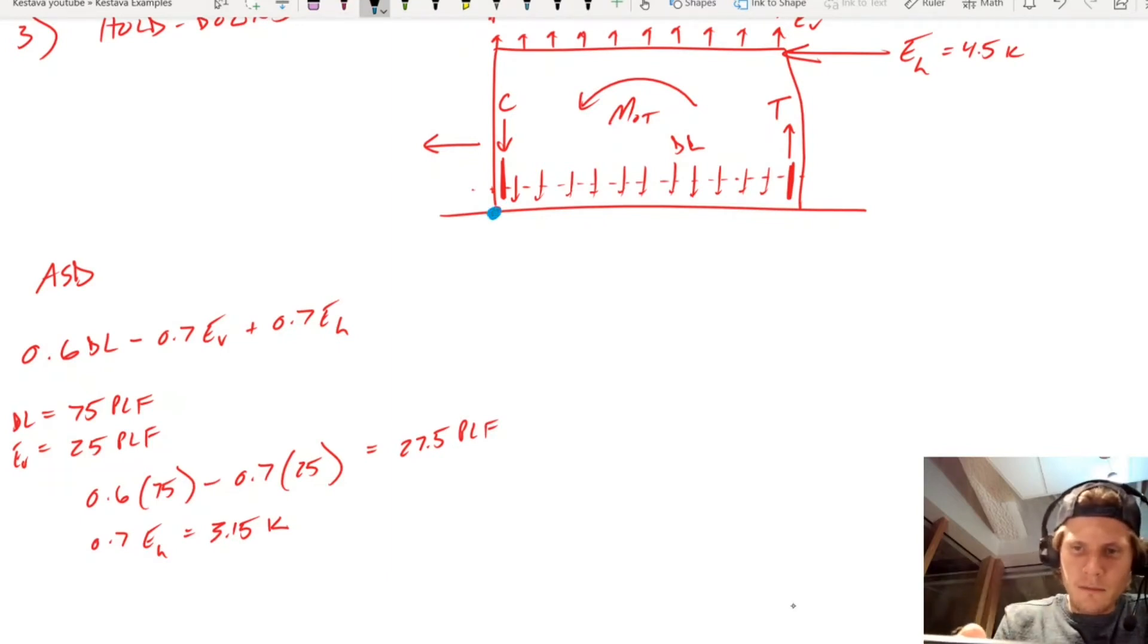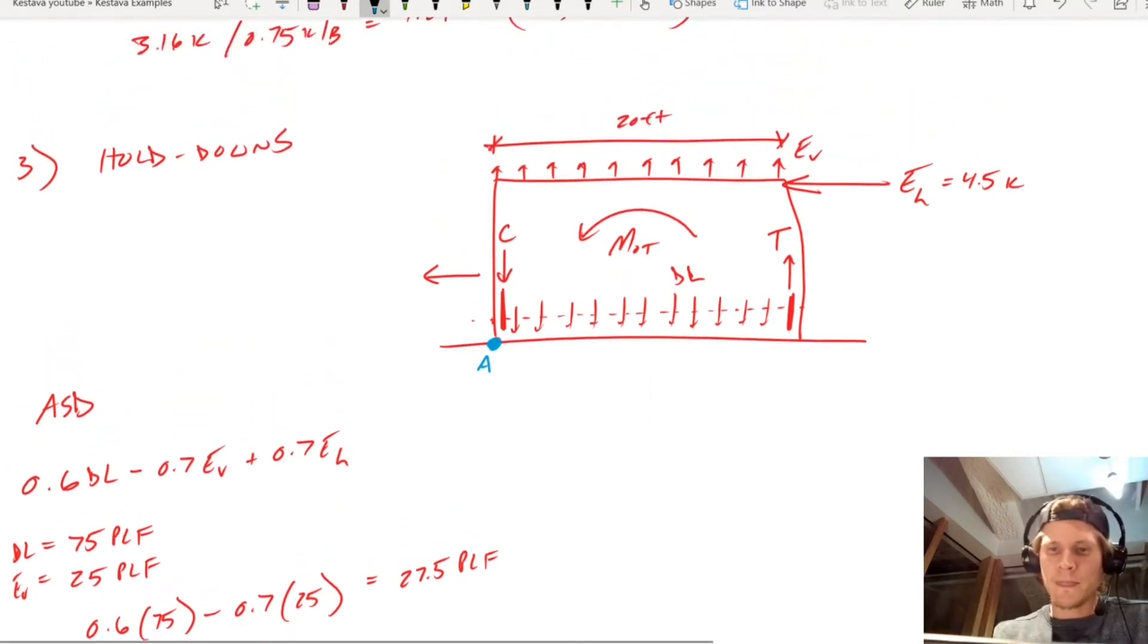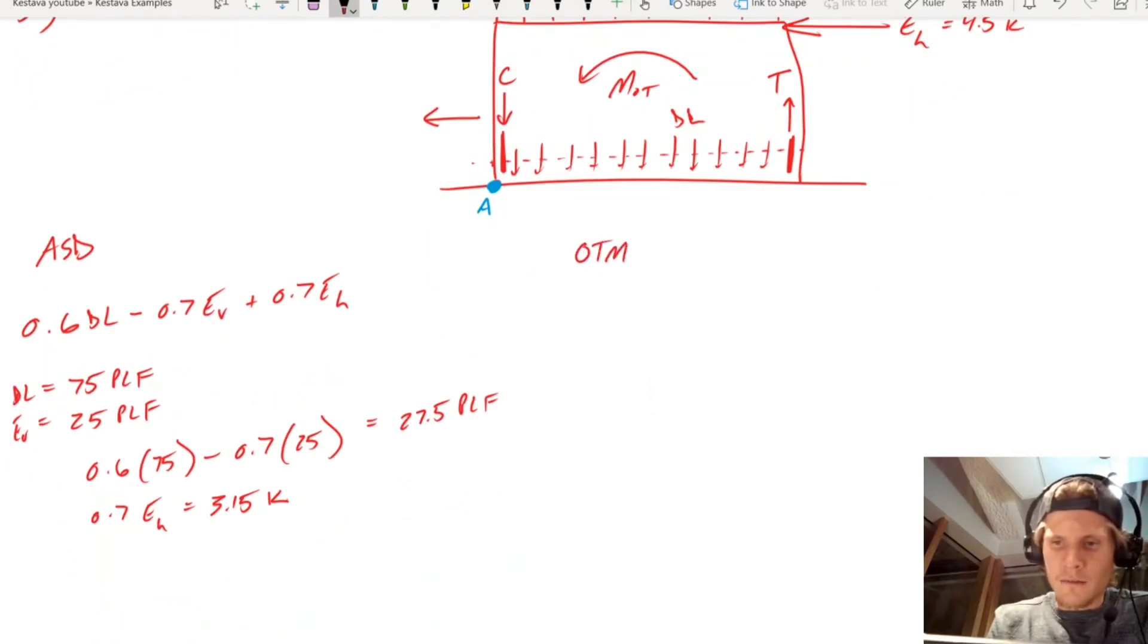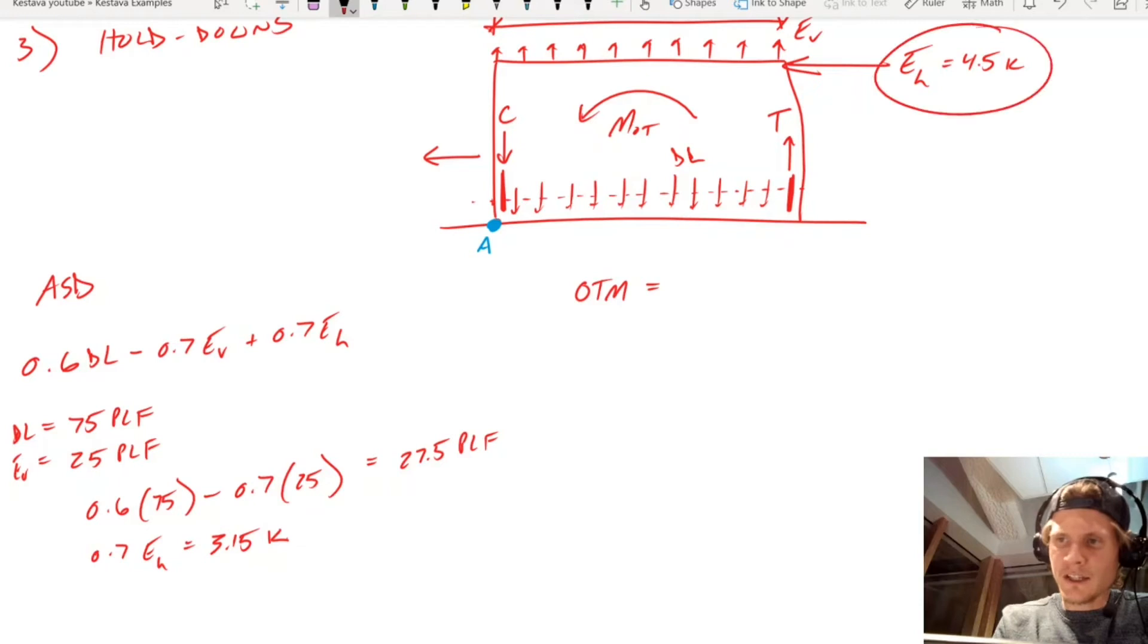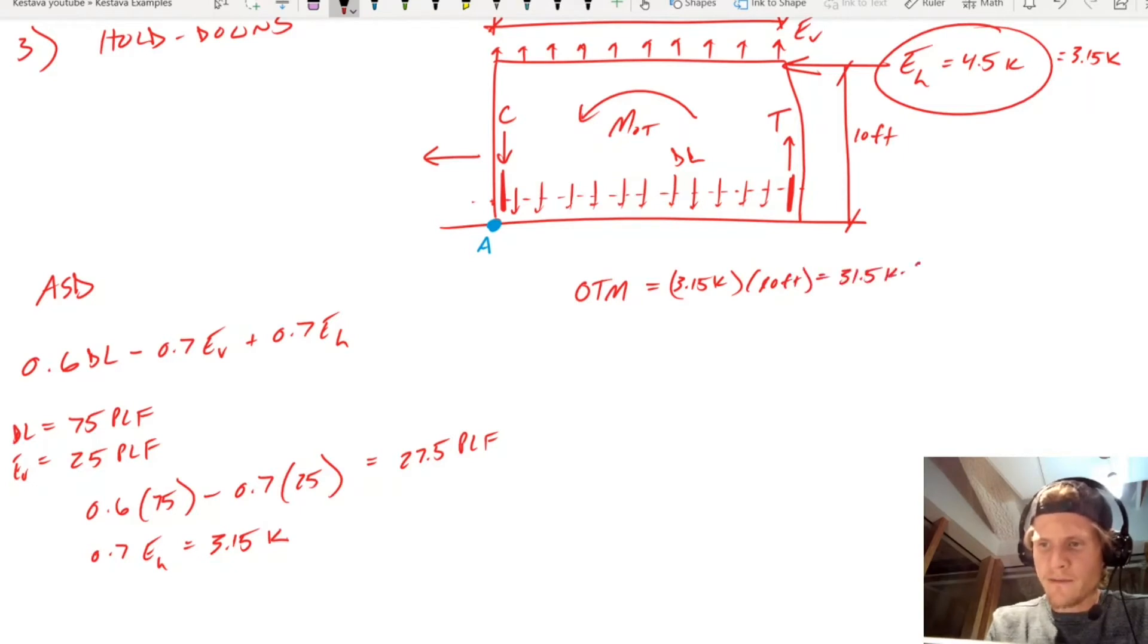All right, so now we're going to take our moment about, I'm going to draw them blue for us, about the point we're going to call it point A. So you have your overturning moment is going to equal force, which is Eh, and it's broken down with the load factor applied of 3.15 kip times force times perpendicular distance for moment, which is just 10 feet. So overturning moment 3.15 kip times 10 feet equals 31.5 kip-feet for your overturning moment.